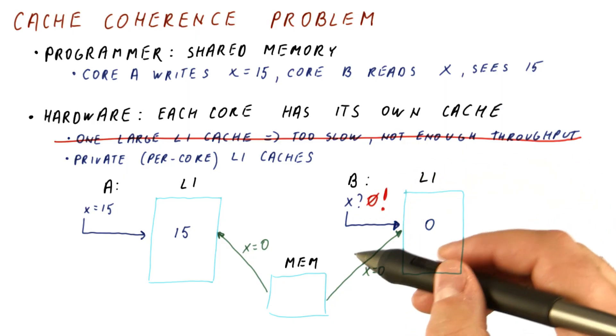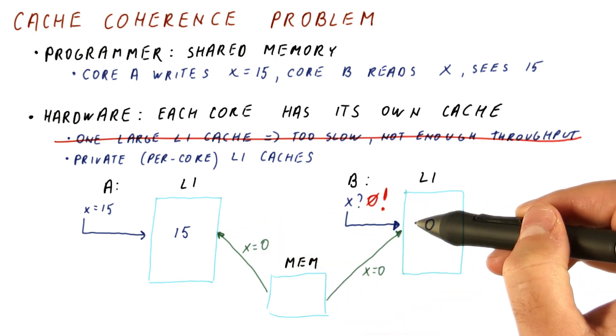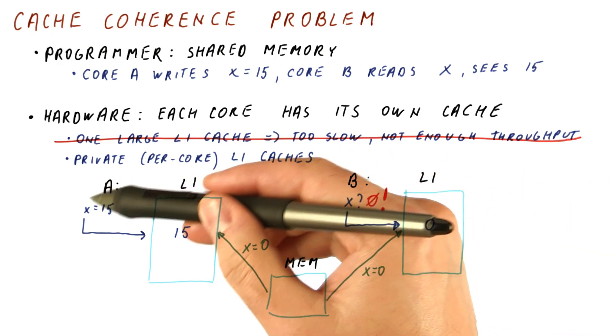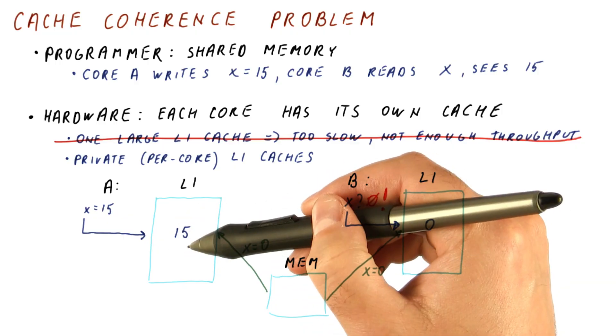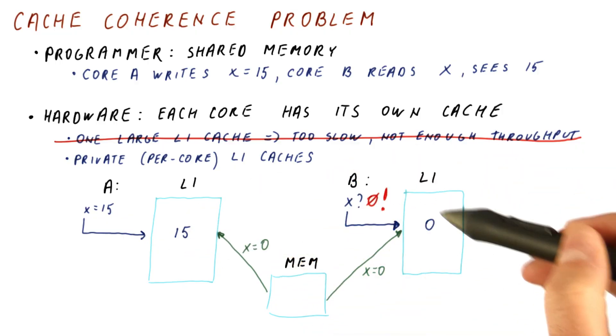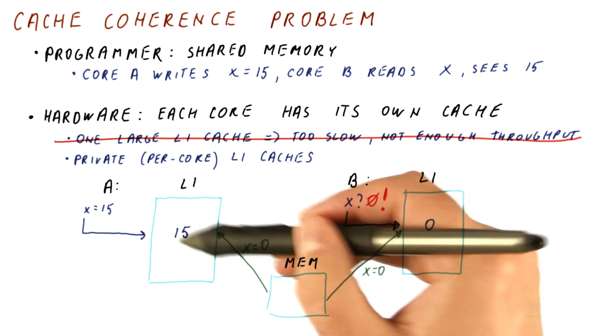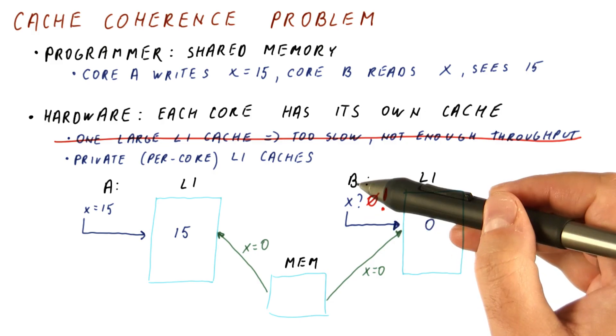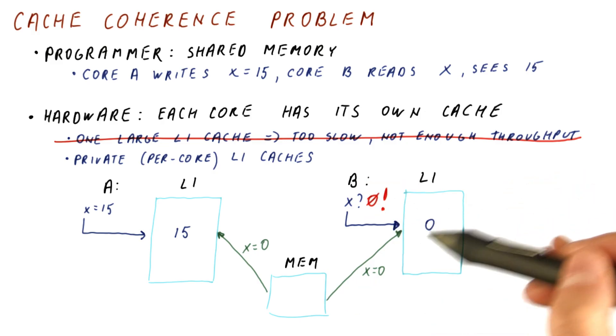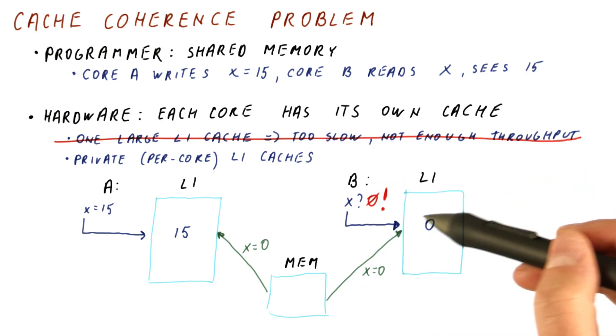And know that this doesn't occur only the first time when we have a cache miss. From now on, A can write to its own L1 cache many times. B can read from its own cache many times. A will keep writing to its cache and not updating memory. B will keep reading from its cache and not checking back from memory. Because once we bring it into the cache, it's going to be a hit.